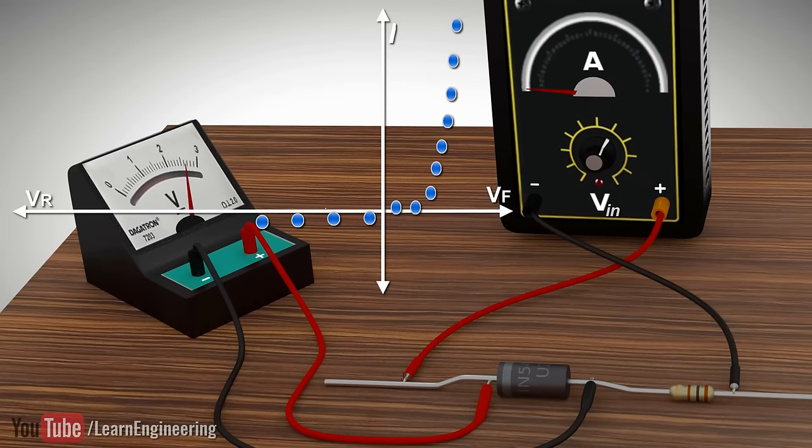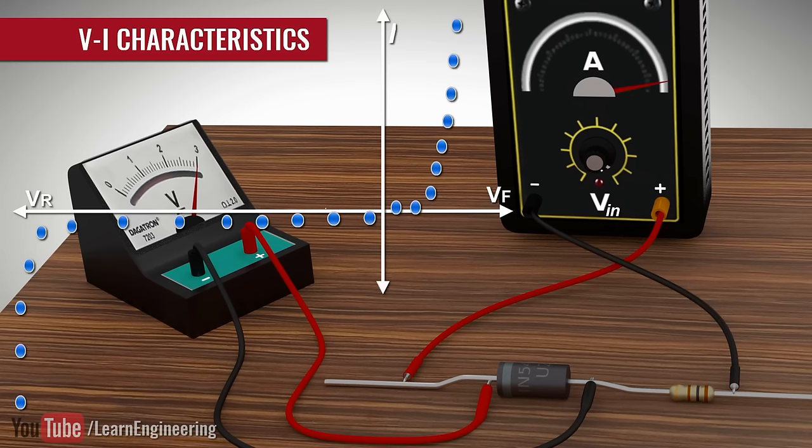At the reverse biased side, applying a very high voltage will damage normal diodes and result in a high current flow.